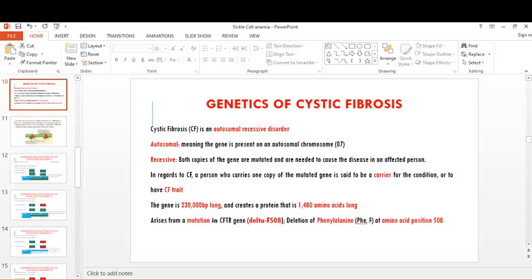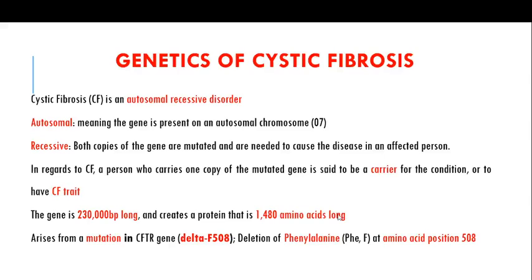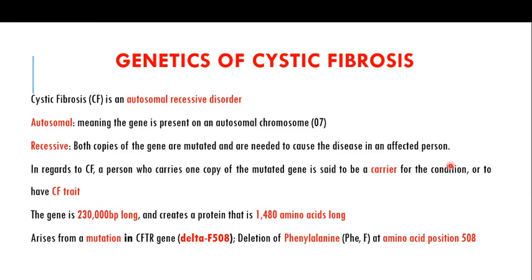Welcome back to this next video — this is the second video on cystic fibrosis. In the first video I explained what cystic fibrosis is, what kinds of mutations in the CFTR gene are responsible for causing it, and how the mutation traps chloride ions in the cell, leading to thick mucus in different organs of the body, particularly in the lungs. I will share the link in the description.